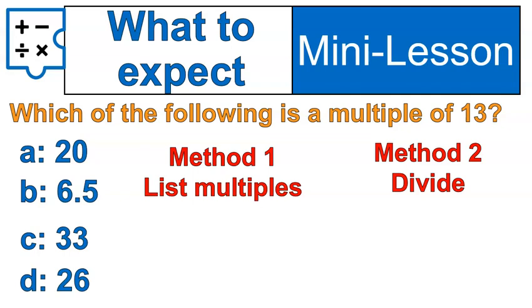In our first method, you could just list multiples in order. I could say 13 times 1, 13 times 2, 13 times 3. Oh, and stop when I find an answer that is a multiple. Notice option D is definitely a multiple because 26 is a multiple of 13.